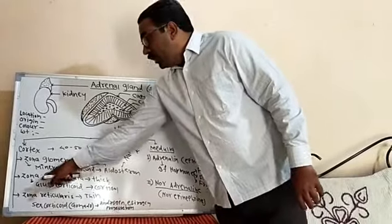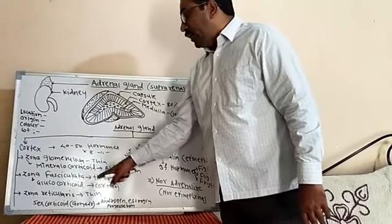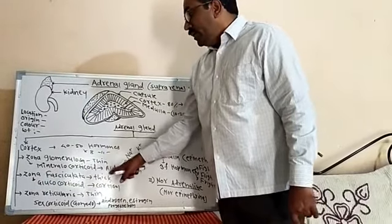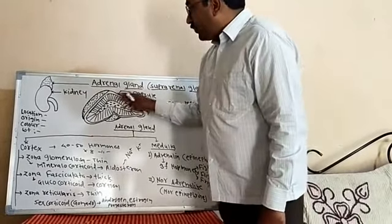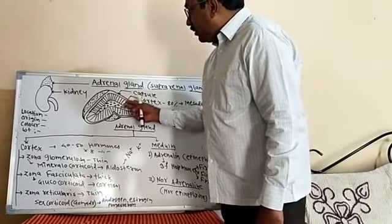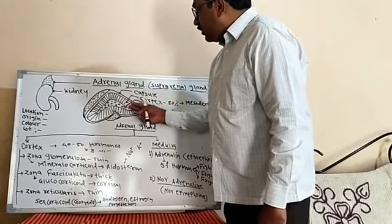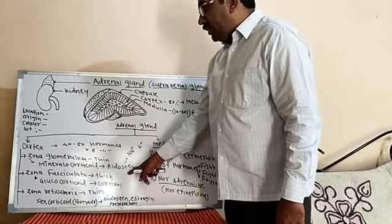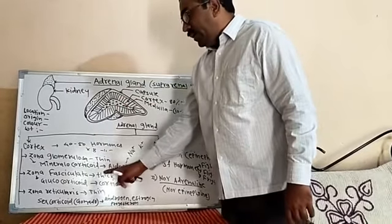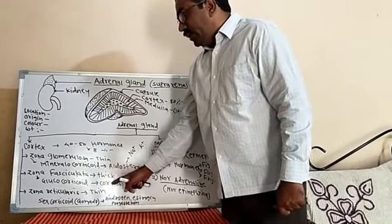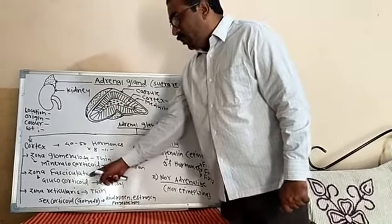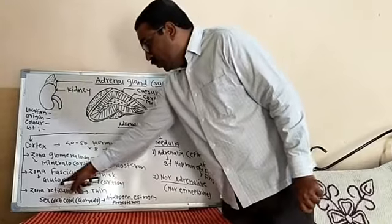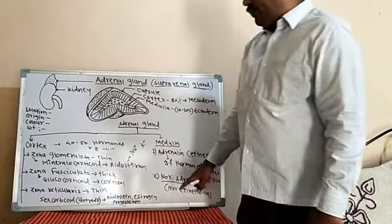The second part of the cortex is zona fasciculata. It is the middle part of the cortex. It is thick in nature and secretes a group of hormones known as glucocorticoids.